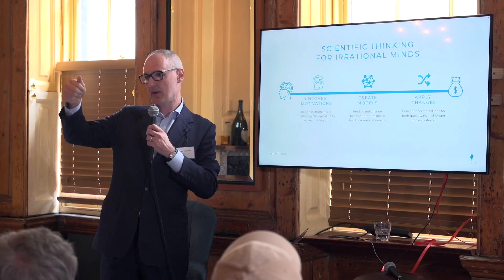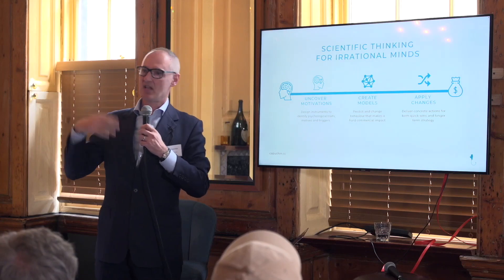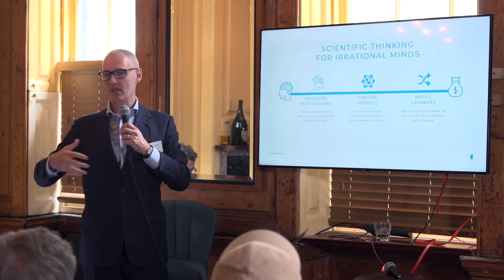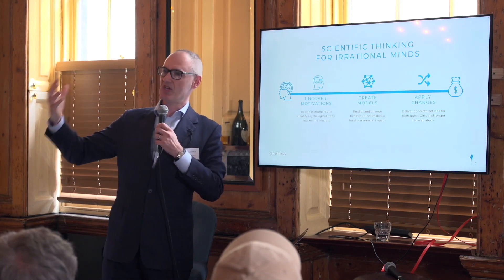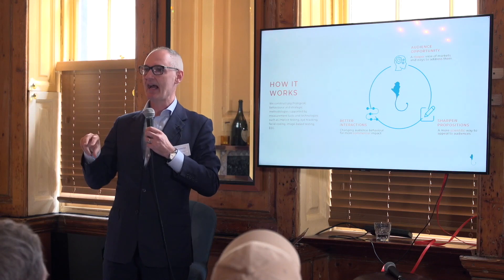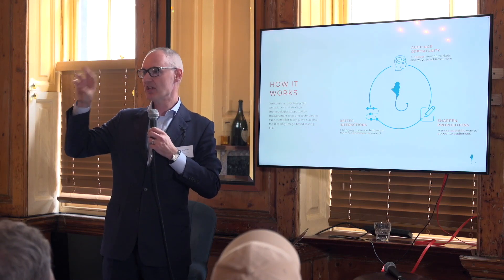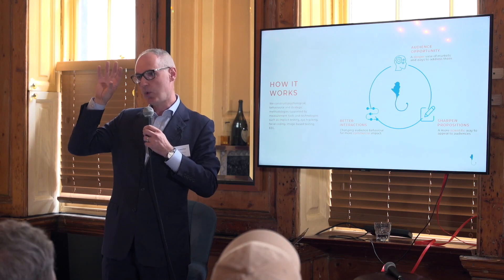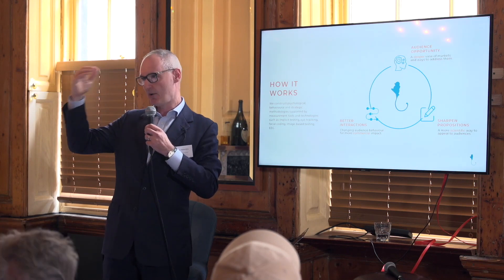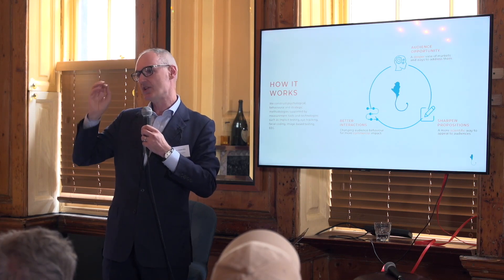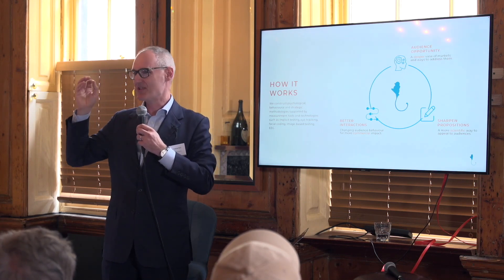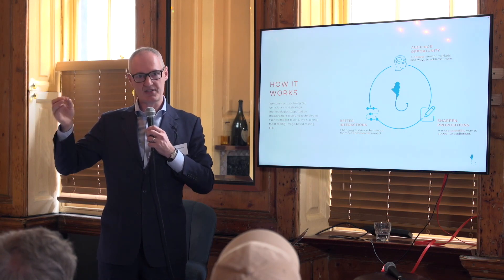Like, how do you stop somebody cancelling an order when they've got their finger over the button? Up to broader things like propositions and pricing, all the way up to strategic questions of market opportunity. You could call it who, what and how. So 'who' is about mapping out market opportunity using psychology and data, quantifying and prioritising those opportunities and then showing very specifically the ways that you address that.